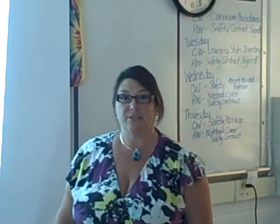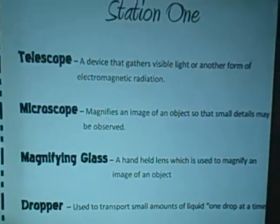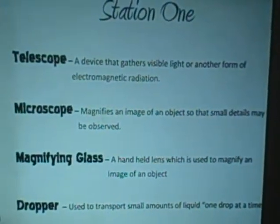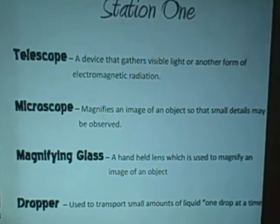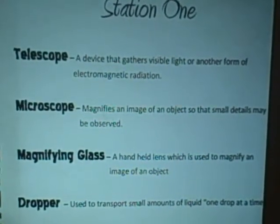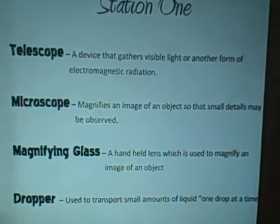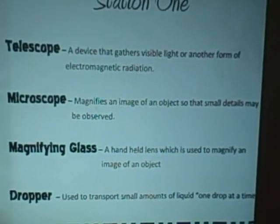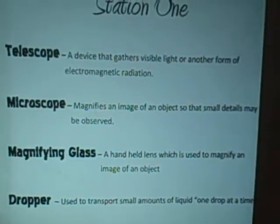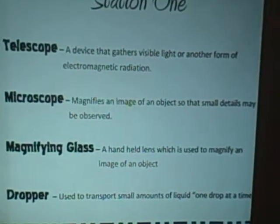The first station of lab equipment is a telescope, a device that gathers visible light or another form of electromagnetic radiation. The microscope magnifies an image of an object so that small details may be observed. The magnifying glass is a handheld lens which is used to magnify an image of an object, and the dropper is used to transport small amounts of liquid one drop at a time.